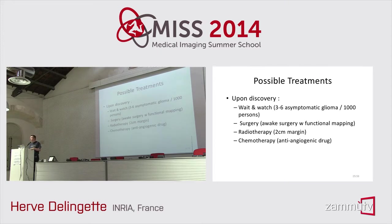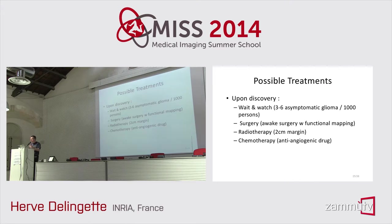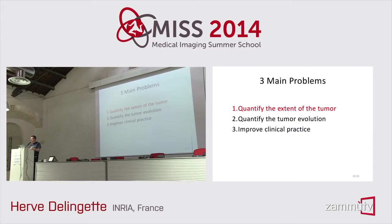There is also chemotherapy, though it is not the main treatment here because the brain-blood barrier blocks drug effects on the brain. However, the tumor tends to break this barrier, so drugs still have some effect. Anti-angiogenic drugs like Avastin can help during treatment. Usually it is a combination of all three: first surgery, then radiotherapy, then chemotherapy.